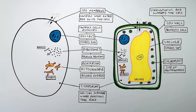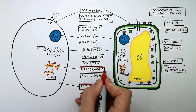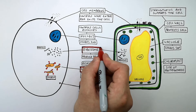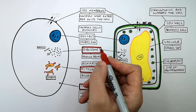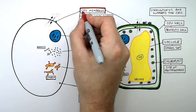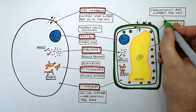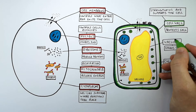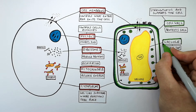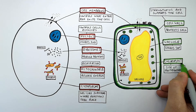Both animal and plant cells have a cytoplasm, mitochondria, ribosomes, a nucleus, and a cell membrane. Plant cells have a cell wall, but animal cells do not. Plant cells have a vacuole, but animal cells do not. Plant cells have chloroplasts, and animal cells do not.